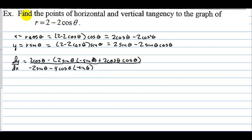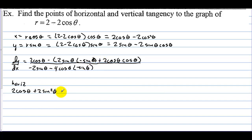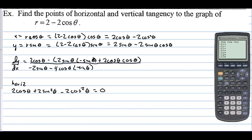We now need the points of horizontal and vertical tangency. For horizontal tangents, the derivative equals 0, so we need the numerator to be 0. We have 2 cosine of theta plus 2 sine squared theta minus 2 cosine squared theta, and we want to find when that equals 0.